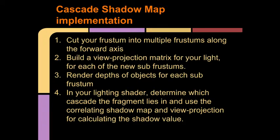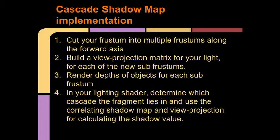Lastly, our lighting shaders will need to determine which cascade applies to the given pixel. This will tell us which shadow map and which view matrix to use for our shadow mapping algorithm. There are multiple ways to make this selection. If we have the pixel's light space position, one way would be to iterate through each cascade starting with the smallest, and then finding the pixel's light space position. Once we have this light space position, we can divide it by its own W component to put it into clip space. If the clip space results do not represent a visible location, we would move on to the next cascade. If they did represent a visible location, we would know we have the right one and would use the correlating shadow map and view matrix.